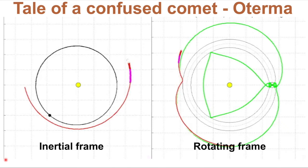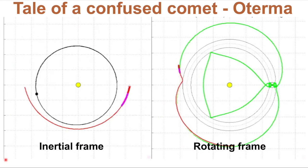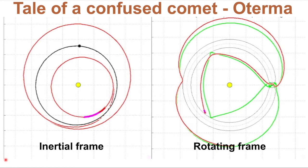We see more structure when we look in a co-rotating frame with Jupiter on the right-hand side, and we see that the comet goes from the outside of Jupiter to inside, being temporarily captured both times.